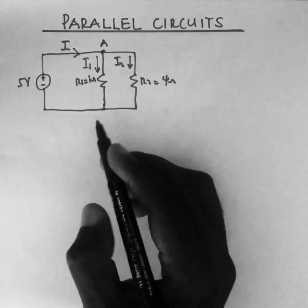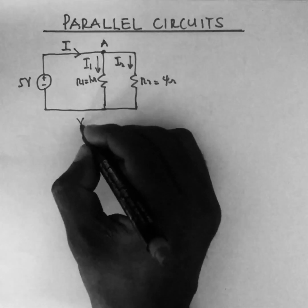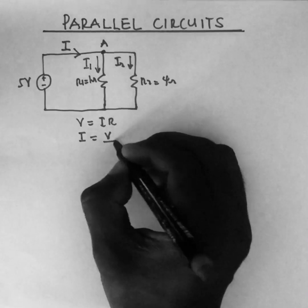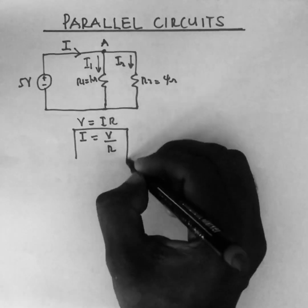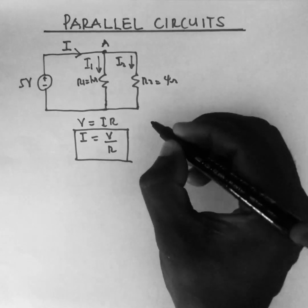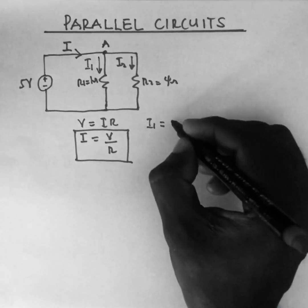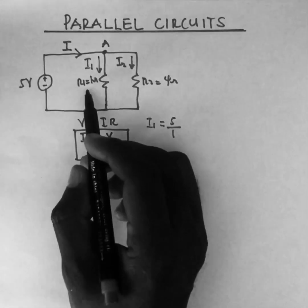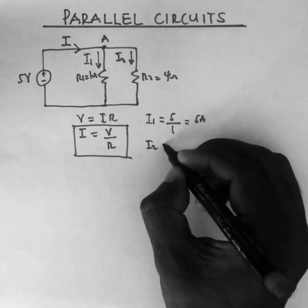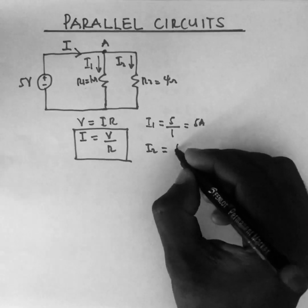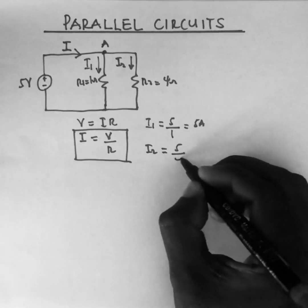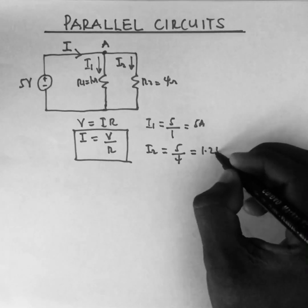Using Ohm's Law — v equals i multiplied by r — we know i equals v divided by r. Because 5 volts is expressed across each resistor, i1 equals 5 divided by 1 ohm, so i1 is 5 amperes. For i2: i2 equals 5 volts divided by r2, which is 4 ohms, giving i2 equal to 1.25 amperes.